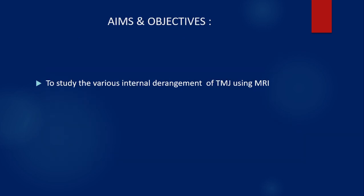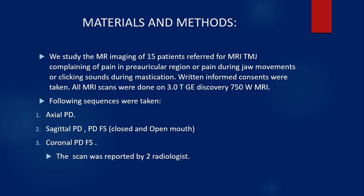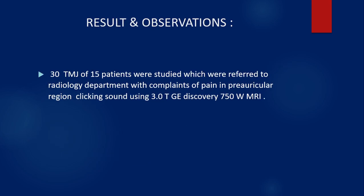The objective of our study is to study the various internal derangements of TMJ using MRI. For materials and methods, we studied 15 patients referred to us with pain in the preauricular region, pain during jaw movement, or clicking sensation. All scans were done on a 3T MRI scanner. The following sequences were used: axial PD, sagittal PD, PD-FATSAT, and coronal PD-FATSAT. The scans were reported by two readers. Results and observations were obtained by studying 30 temporomandibular joints of 15 patients referred to our department.